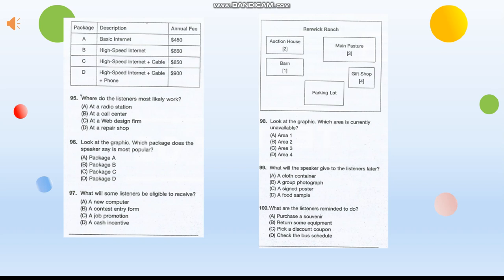Number 98. Look at the graphic. Which area is currently unavailable? Number 99. What will the speaker give to the listeners later? Number 100. What are the listeners reminded to do?